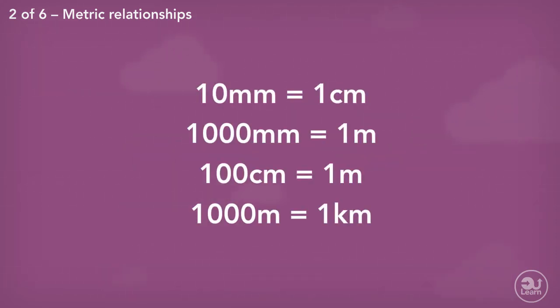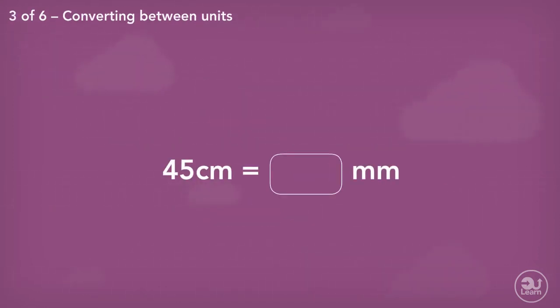These relationships can be used to convert to different units. For example, convert 45 centimeters to millimeters. Throughout this series, we've used ratios to convey relationships. The relationship between millimeters and centimeters can be written like so.